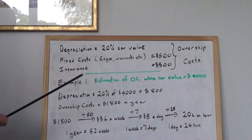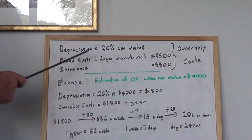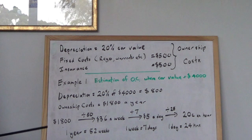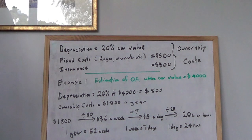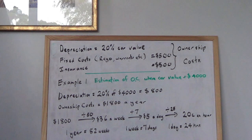These costs here will probably be similar. Your fixed costs are your registration, warrant, etc. - that's around about $500. Your insurance will be around about $500. And there's a thing called depreciation of car value, which means your car loses 20% on average of its value every year.